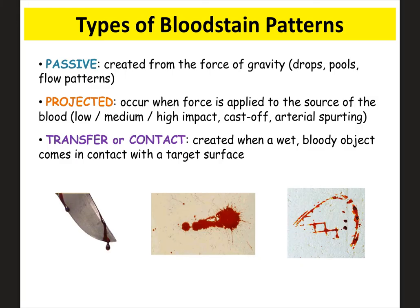If you're looking at the picture on the right, the main circular part is the parent drop, the other drop that came off is a satellite spatter, and you can see the little spines on the edges of the parent drop — these can give you information about movement and direction. Now, there are three different types of bloodstain patterns. Passive bloodstains are basically created due to gravity. So if there was blood on a weapon and it dripped off, that would be a passive bloodstain — gravity caused the blood to drip, as you can see in the picture.